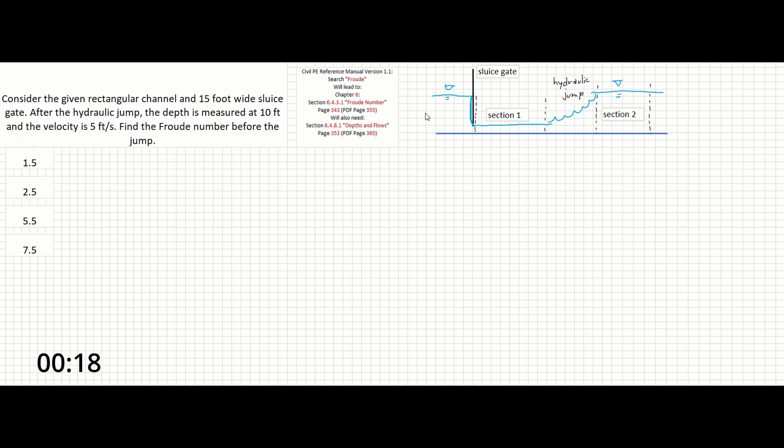So over here we have our rectangular channel with a backlog of water in a reservoir. We have the open sluice gate. We can see the water moving through it, going up a hydraulic jump, and becoming a new depth. This is section 1, this is section 2, corresponding to before the jump or after the jump.